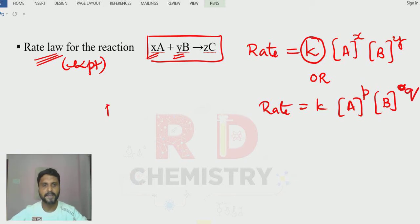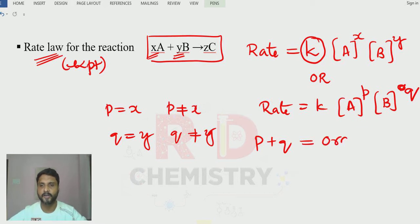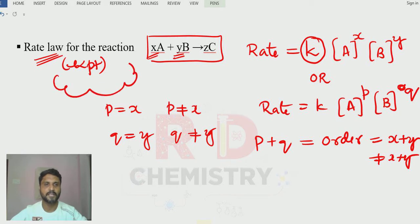Now, P may or may not be equal to x, and Q may or may not be equal to y, because this is the experimental rate equation. The sum P + Q is called the order of the reaction, which may or may not equal x + y. Remember, the order is always determined experimentally.